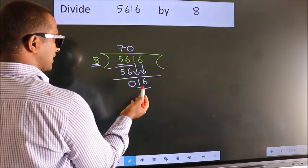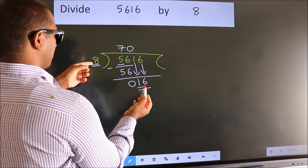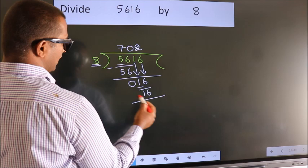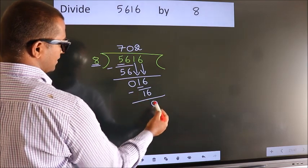When do we get 16 in the 8 table? 8 times 2 is 16. Now, we subtract. We get 0.